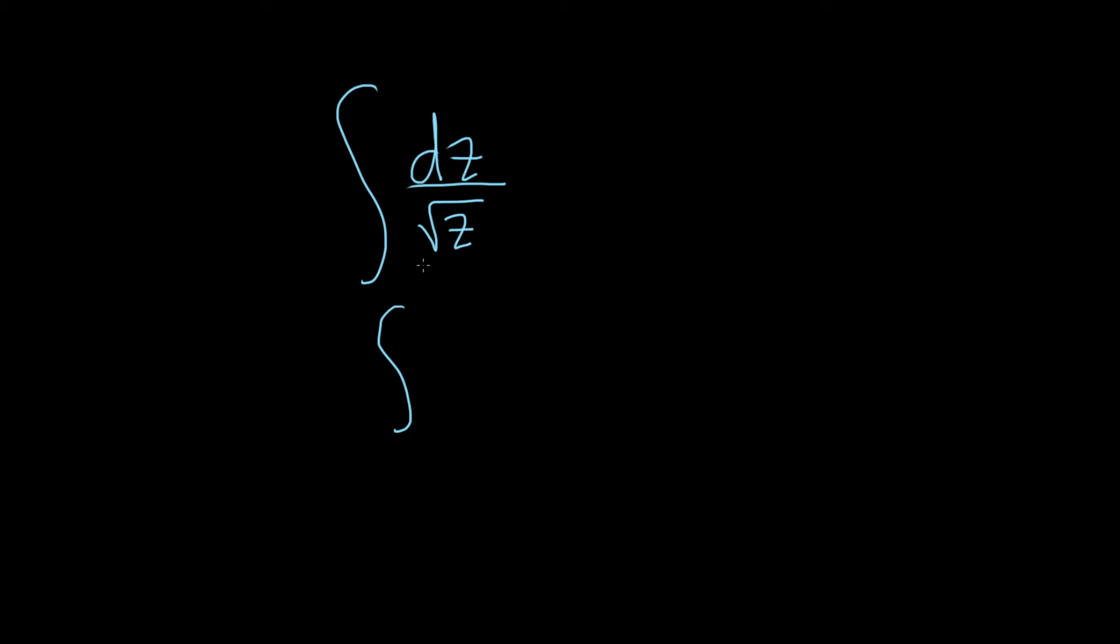One, whenever you have a square root like this, square root of z, there's really a 1 here and there's a 2 here. And so you can write this as z, and it's this number over this number, so it's 1 over 2, always, every time.